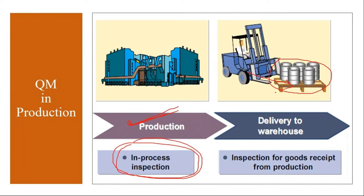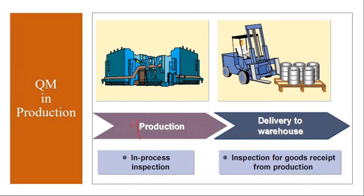After you complete the production, you transfer the manufactured product to the warehouse, and they will do the quality inspection before selling the product to the market. This is called inspection for goods received from production. So production has been completed, you transfer it to the warehouse, then the quality team does quality checks before releasing it to the market. These are the two places: one is during production, second is after completion of production — in-process inspection and inspection for goods receipt from production.